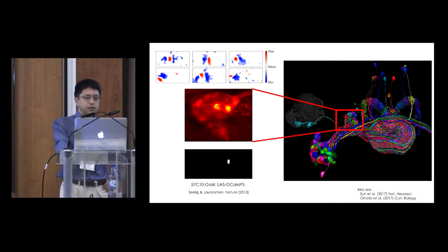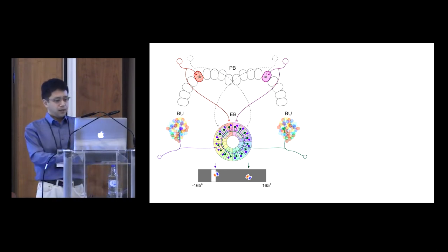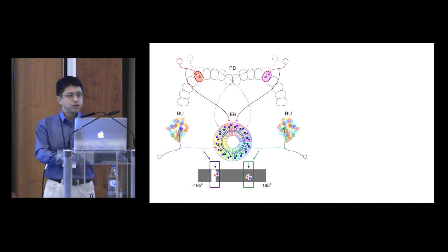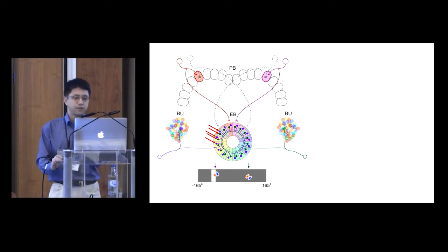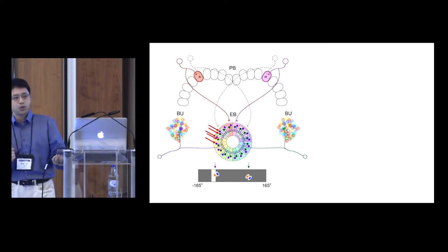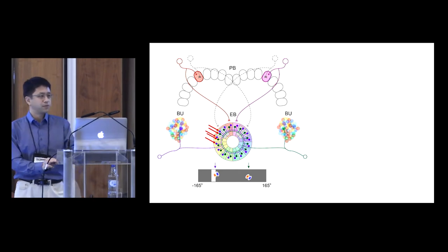Based on this information, we developed a computational model. Here is how the model works. These purple and green ring neurons respond to visual features at particular location in the visual field. And the size of these small blobs represent the strength of inhibitory synaptic weights from the ring neurons to compass neurons, which are schematized as wedges of the ellipsoid body. The idea is that if a compass neuron is co-active with a ring neuron, then synapses between those two neurons get depressed. And this synaptic depression is the key to flexibly mapping a visual scene onto the heading representation.